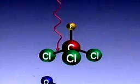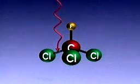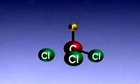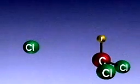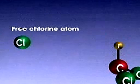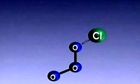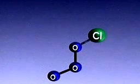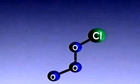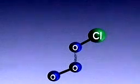First, high energy ultraviolet rays break chlorine atoms free from the CFC molecule. These free chlorine atoms can react with other molecules in the atmosphere. When a chlorine atom reacts with an ozone molecule, it steals one of the ozone molecule's three oxygen atoms.